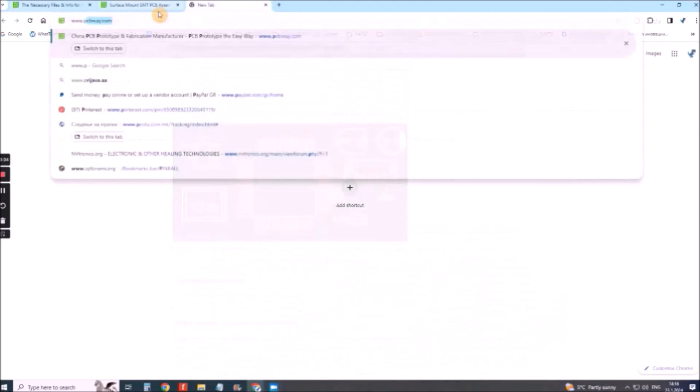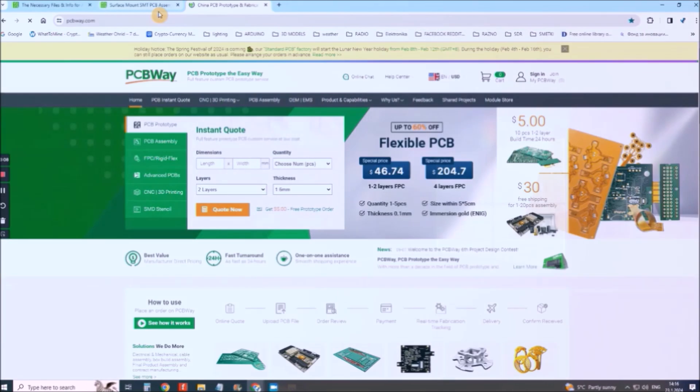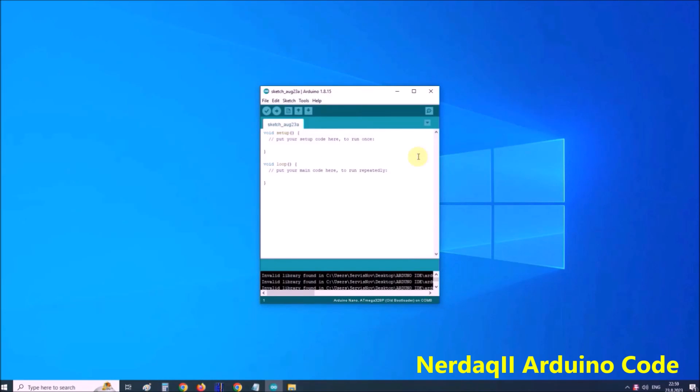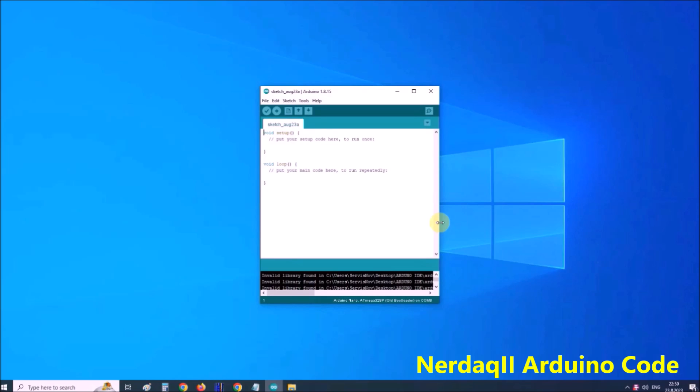Visit www.pcbway.com for more services. In Arduino IDE, in tools, we select Arduino Nano board and corresponding COM port, in our case that is COM port 8. Then we go to open and locate the folder with the NerdAQ software.